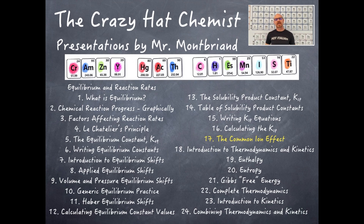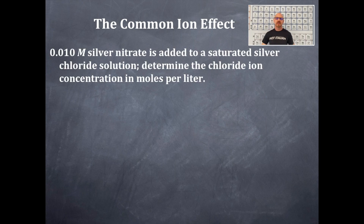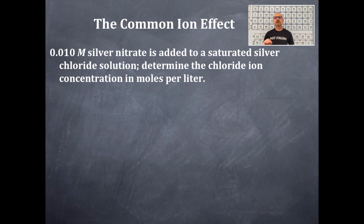Welcome to the Crazy Hat Chemist. Today we're continuing equilibrium and reaction rates — this is video 17 — and we're talking about the common ion effect. The problem: 0.010 molar silver nitrate is added to a saturated silver chloride solution. Determine the chloride ion concentration in moles per liter. The first things we need are our solubility rules and our table of Ksp values.